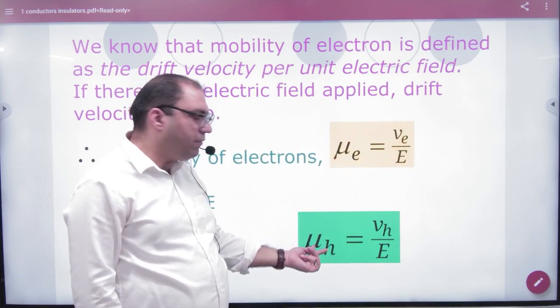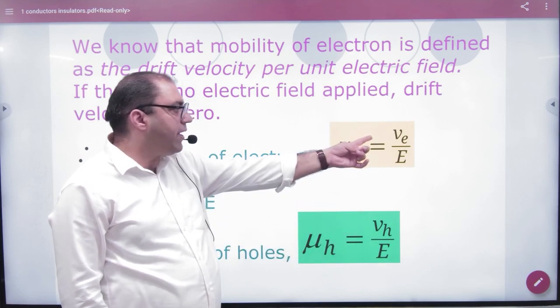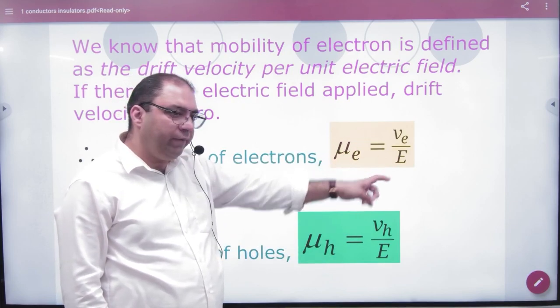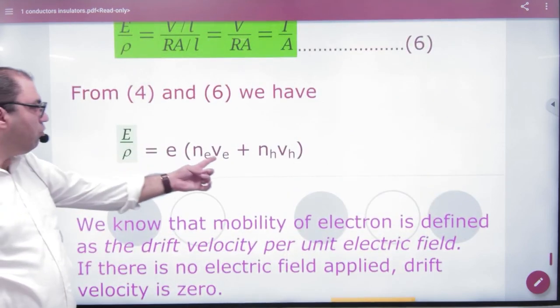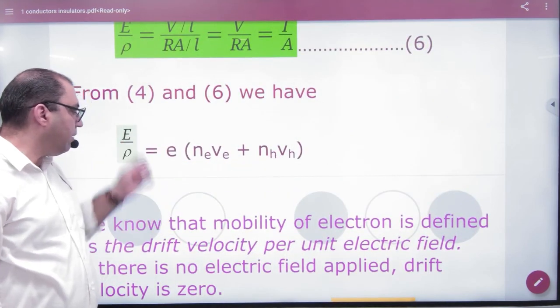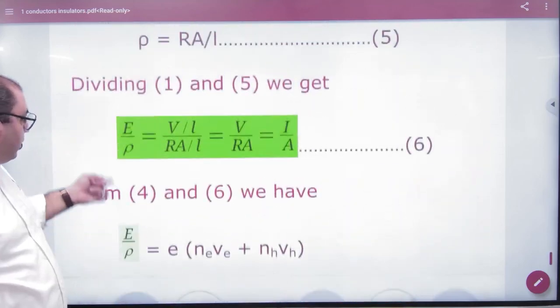Similarly for hole mobility VH by E. Cross multiply, VE value is mu into E. So VE and VH value we will put here and here. What was I and A? E by rho.